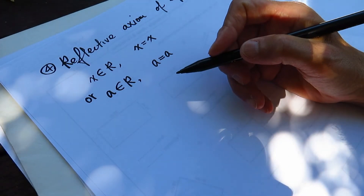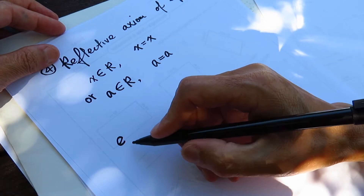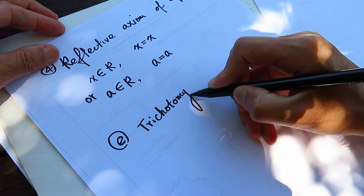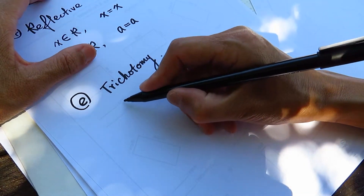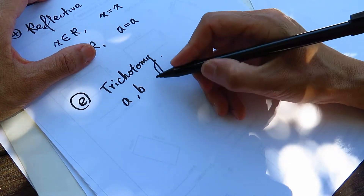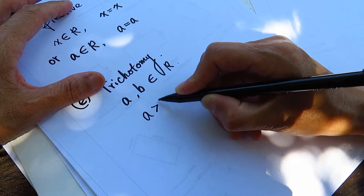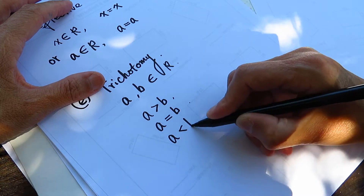Reflexive axiom for equality. Number five is trichotomy. Once upon a time, there are two numbers, A and B. A and B are elements of the real numbers. There are three kinds of relationship between A and B. First, A is bigger than B. Second, A is equal to B. Third, A is smaller than B.